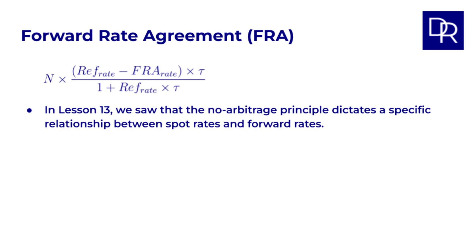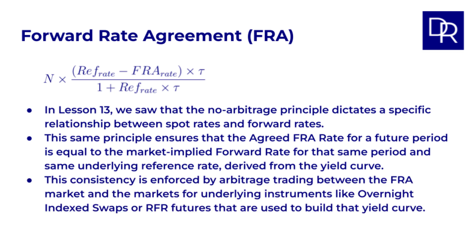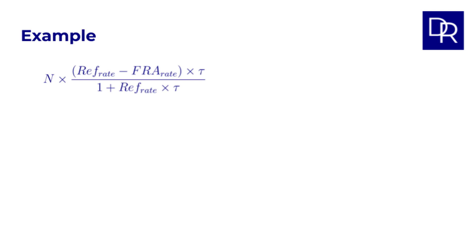Now, in lesson 13 we saw that the no arbitrage principle dictates a specific relationship between spot rates and forward rates. This same principle ensures that the agreed FRA rate for a future period is equal to the market implied forward rate for that same period and same REF rate derived from the yield curve. This consistency is enforced by arbitrage trading between the FRA market and the markets for underlying instruments like overnight index swaps or risk free rate futures that are used to build that yield curve.